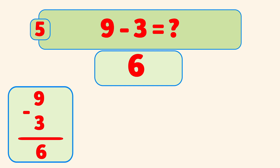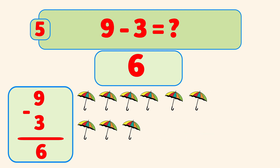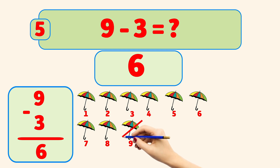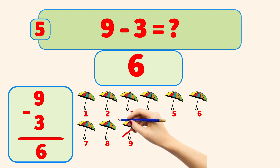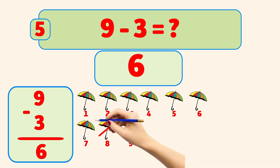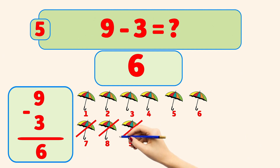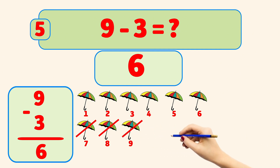Starting with 9 umbrellas and removing them one by one: nine, eight, seven. Now we have six umbrellas left.